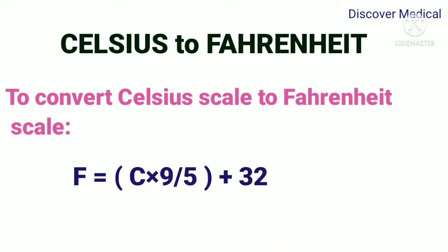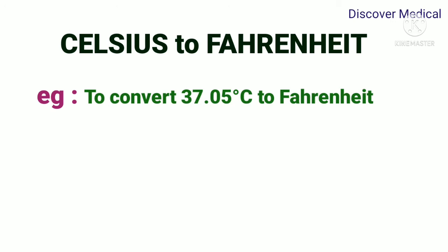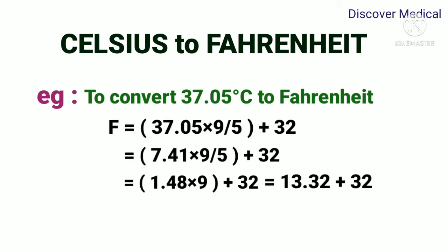For example, to convert 37.05 degrees Celsius to Fahrenheit: F equals 37.05 times 9 by 5 plus 32. We got the value 98.7 degrees Fahrenheit.